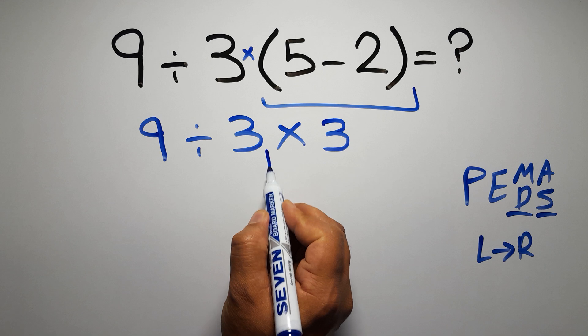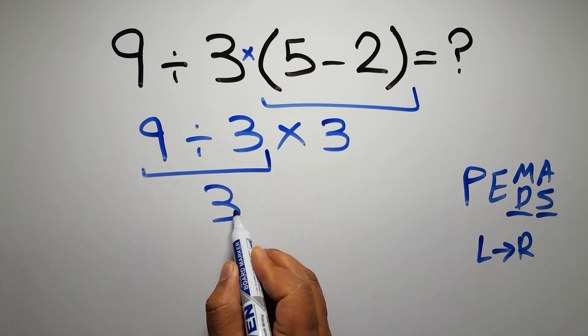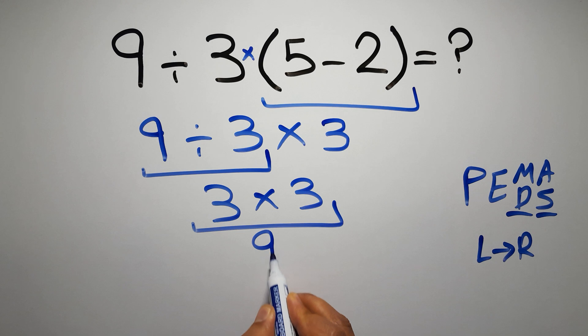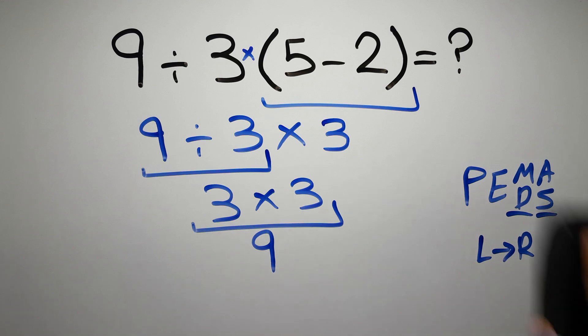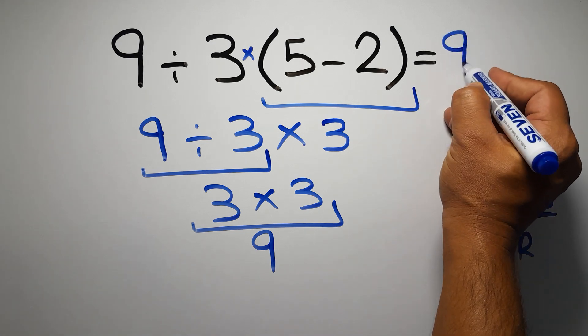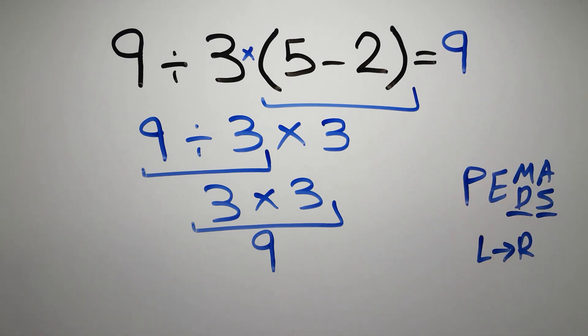9 divided by 3 equals 3, and 3 times 3 is just 9. And this is our final answer to this problem. The correct answer is 9.